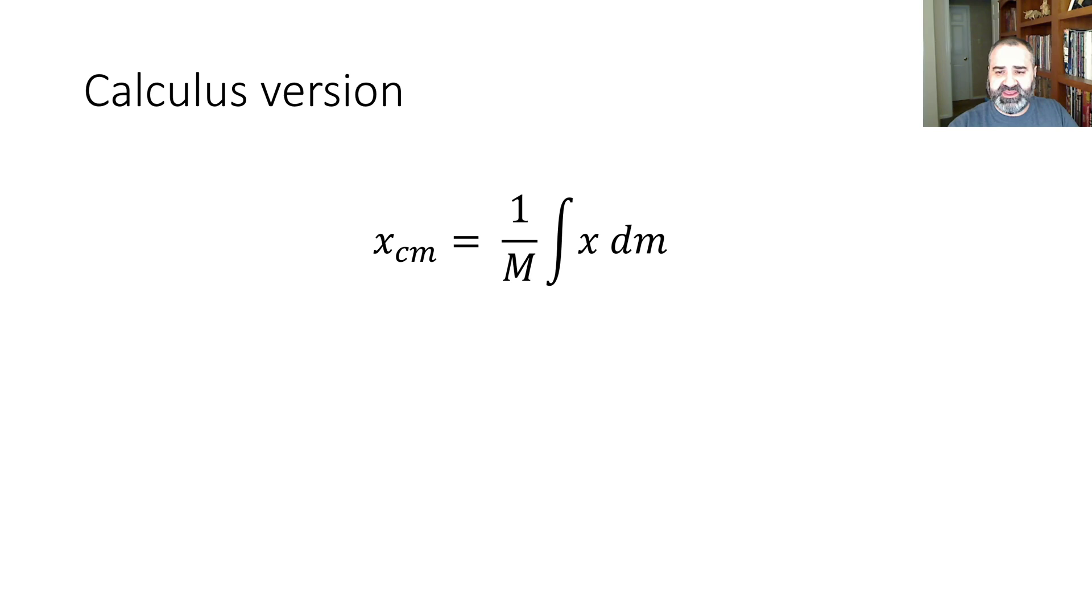So let's consider a narrow triangular wedge. It's length L. It's got a little sliver of mass out of it dm. How much mass does dm have? I need dm in terms of dx. That sliver's thickness dx. How do I know? Well, let me give you a mass distribution along this wedge.